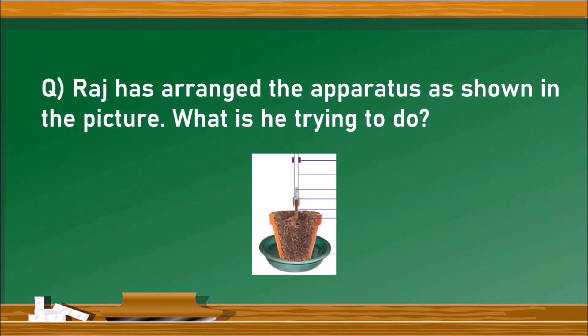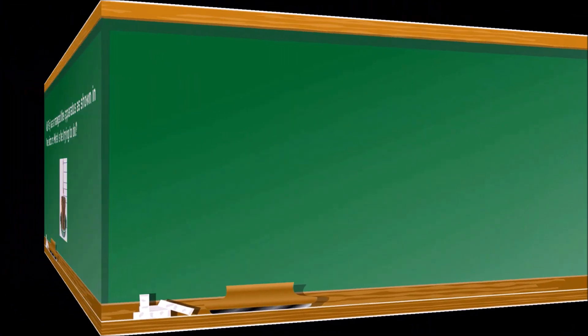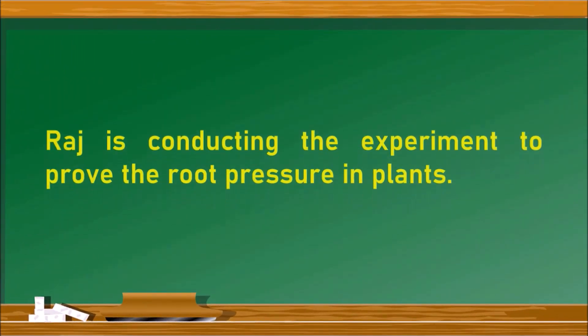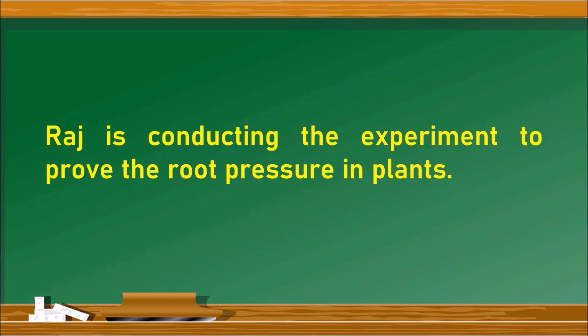Let us go to the next question. Raj has arranged the apparatus as shown in the picture. What is he trying to do? This picture indicates the experiment to prove the root pressure in plants.